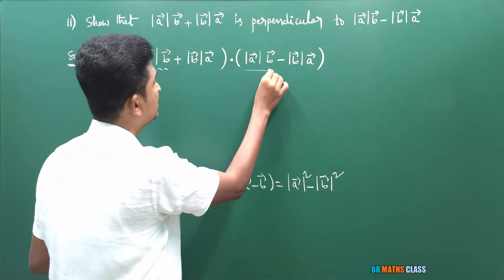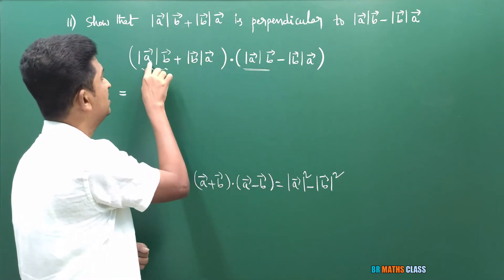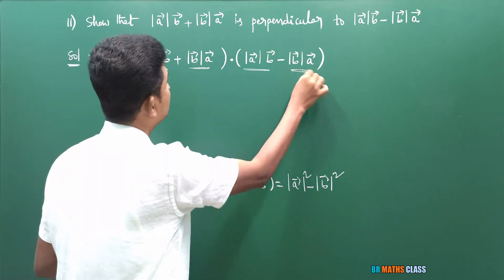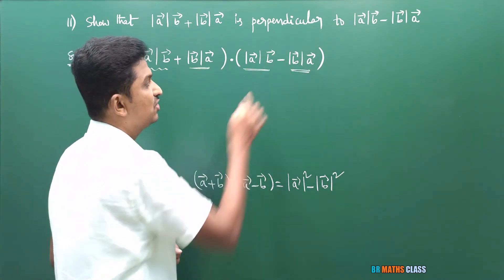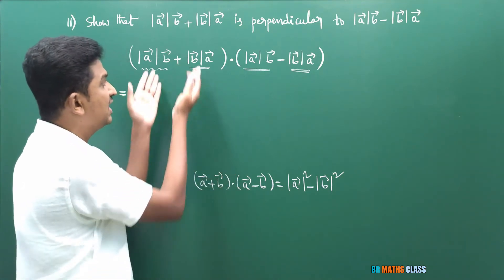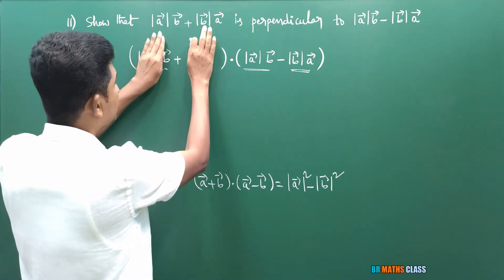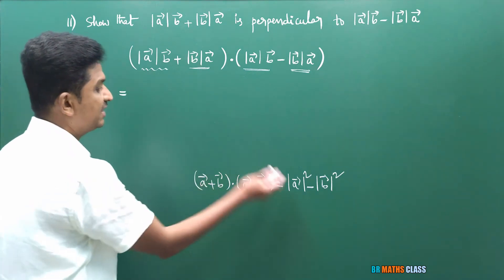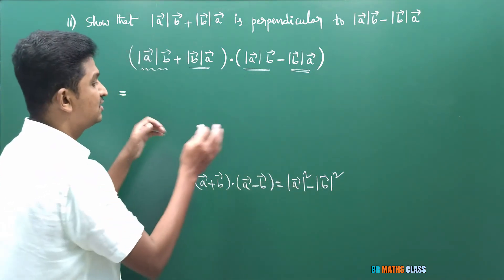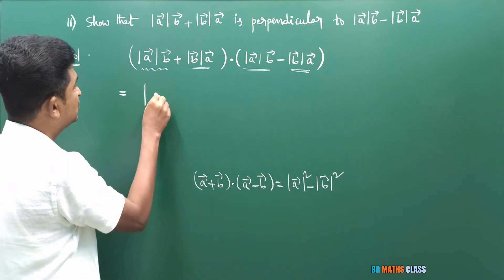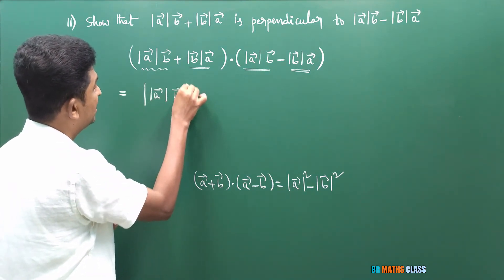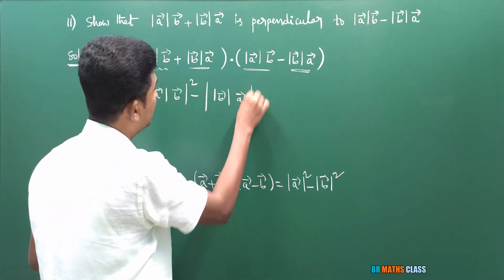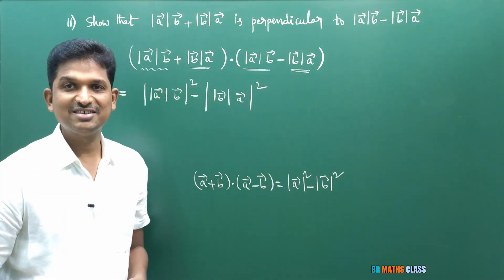The given vectors involve |a̅||b̅|. We apply the formula: (a̅ + b̅) · (a̅ − b̅) = |a̅|² − |b̅|². The vector here is like a̅ = |a̅|·b̅-magnitude and b̅ = |b̅|·a̅-magnitude. Using the property that magnitude of ma̅ = m × |a̅|, we can expand both squared terms.